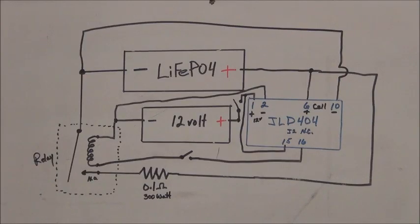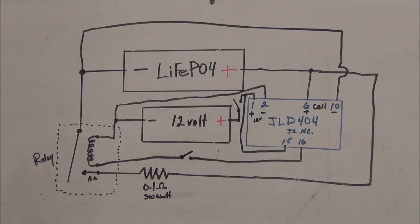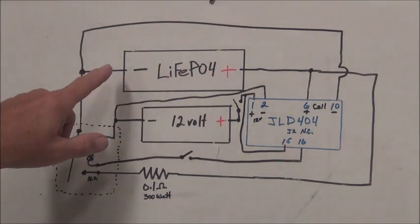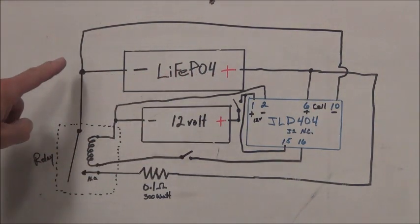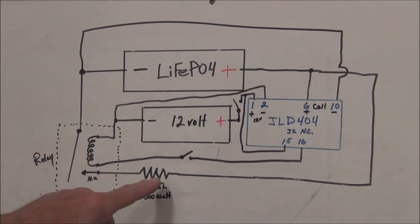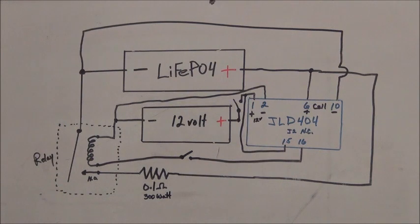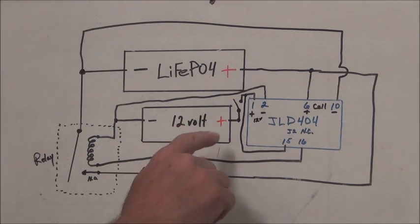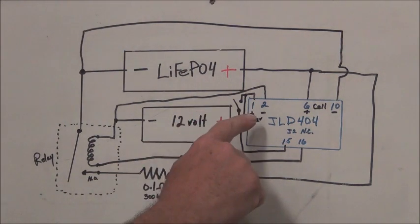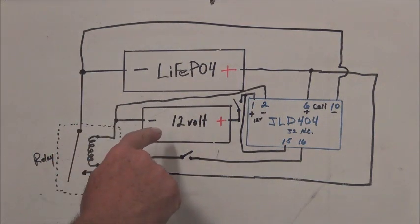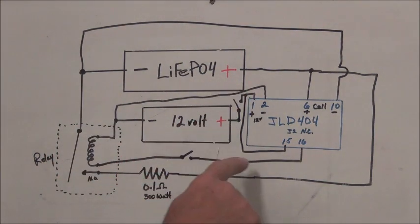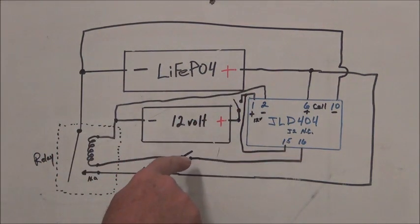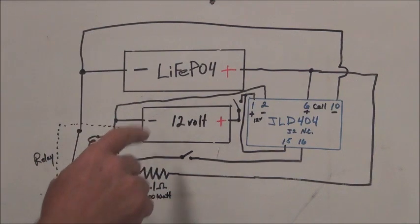So let's take a look at it in schematic form real quick. So here's a crude little drawing of what I just showed you. So you can see we have our lithium battery that we're discharging goes through the relay, through our load and back. And the 12 volts, here's our switch powering the JLD 404. And power goes through the relay, our secondary switch we had there, through the coil back.